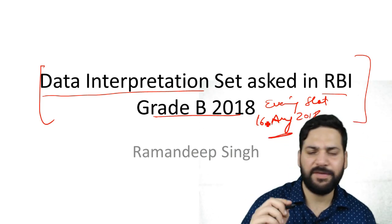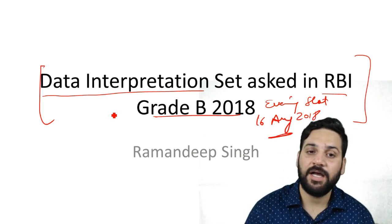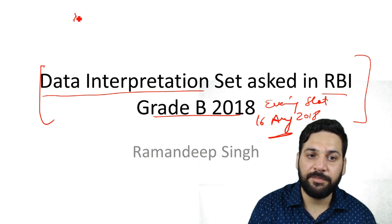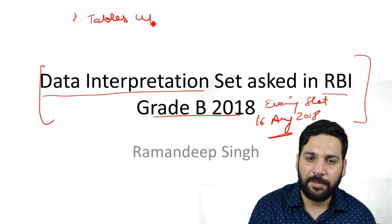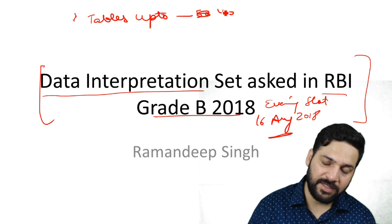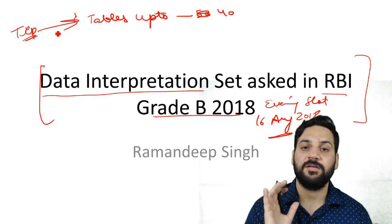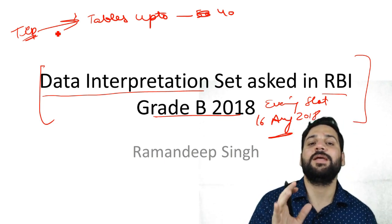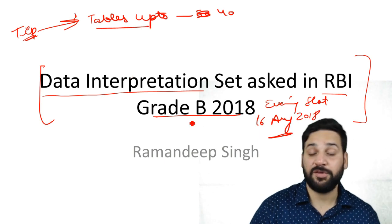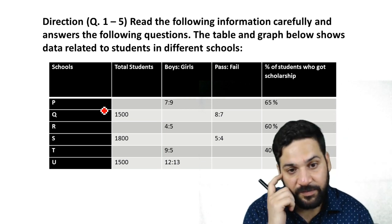There were five really important questions in this set. Before starting, the most important thing for Data Interpretation is to learn the multiplication tables up to 40. This is really critical. If you ask me what is the most important differentiator for DI sets, it's calculation speed — and you can improve your calculation speed by learning tables up to 40, squares, and fractions.